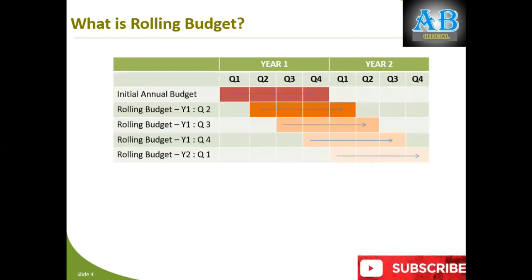Here is a pictorial understanding of rolling budget. Assume your initial annual budget is for Year 1, which has four quarters. Once Quarter 1 ends, you prepare a rolling budget covering the remaining three quarters of Year 1 plus one quarter of Year 2. At the end of Quarter 2, you add the second quarter of Year 2. So at every point in time, you have a 12-month forward budget.